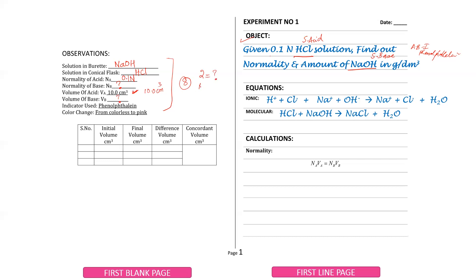From the two observations, one is normality and one is volume. The indicator is phenolphthalein, and the color change is colorless to pink. The initial burette reading is filled to 0.0 cm³.